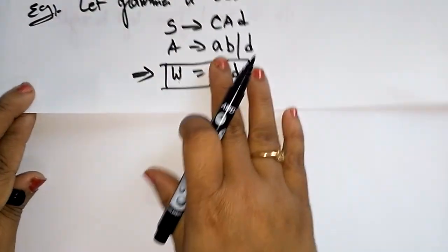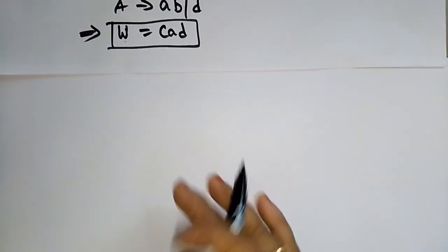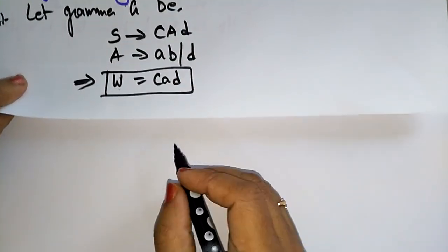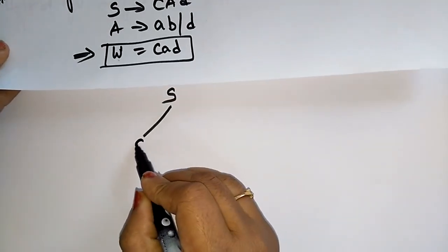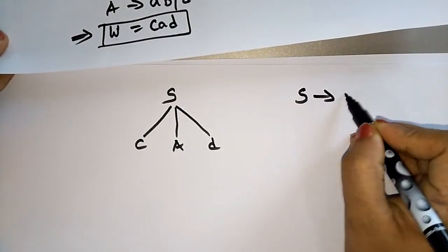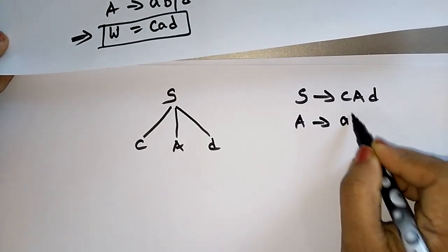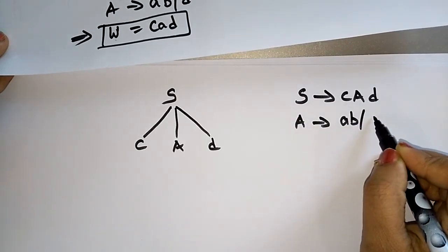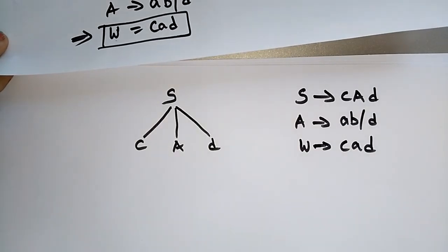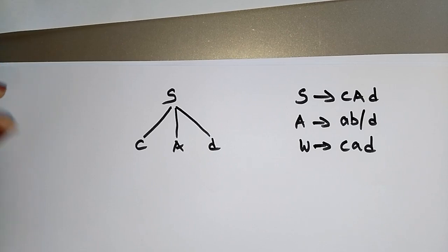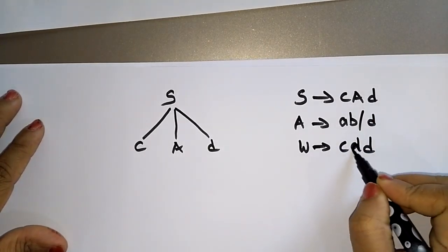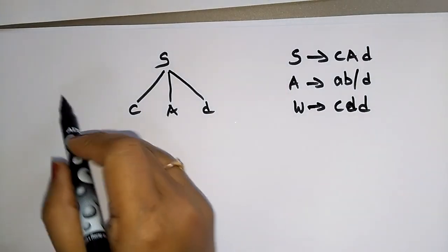According to the concept, S is the root node — the start symbol. The tree starts with S, which produces cAd. So the root node S has children c, A, and d. A has two productions: ab and d.